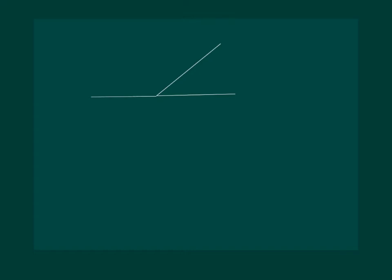Now look at this figure. Here angle 1 and angle 2 are adjacent angles, but the non-common sides of angle 1 and angle 2 are forming a line. That means angle 1 plus angle 2 is equal to 180 degrees. Also, if we consider each of these lines as rays, the non-common sides of angle 1 and angle 2 are opposite rays, as they are in opposite directions.